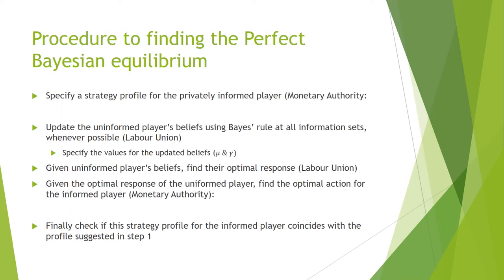Finding the Perfect Bayesian Equilibrium involves four steps. First, specify a strategy profile for the monetary authority. Second, update the uninformed player's beliefs using Bayes' rule — updating mu and gamma for the labour union. Third, using the beliefs of the uninformed player, find their optimal responses: whether to play high wages or low wages. Fourth, given the optimal response of the labour union, find the optimal actions of the informed player. If they match the strategy defined in step one, we have a Perfect Bayesian Equilibrium.